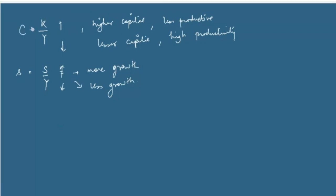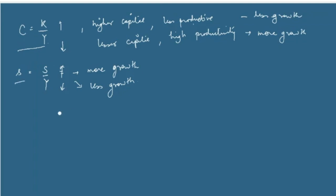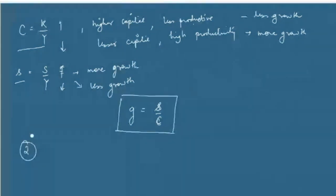Two factors are at play: the capital output ratio — the amount of capital needed to produce a unit of output — and the savings rate. Harrod said these two factors will determine the growth process. Depending on what the savings rate is and what the capital output ratio is, we can determine the growth rate. So the growth rate in the Harrod model is represented by the ratio s/c.